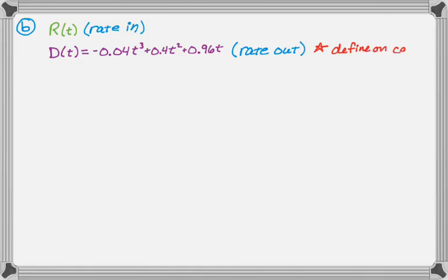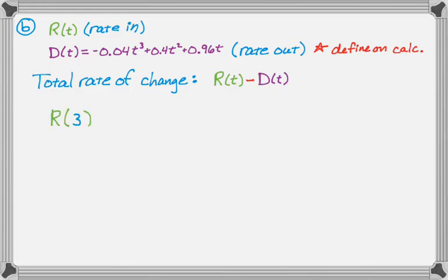So the total overall rate of change is going to be the rate in minus the rate out. So that's going to be R of T minus D of T, and I need to know what the value of that is at T equals three. So I use my calculator to do R of three minus D of three, which gives me negative 0.314.